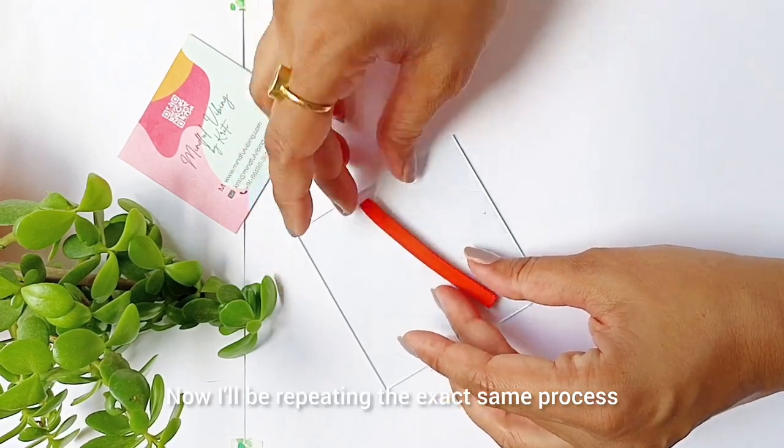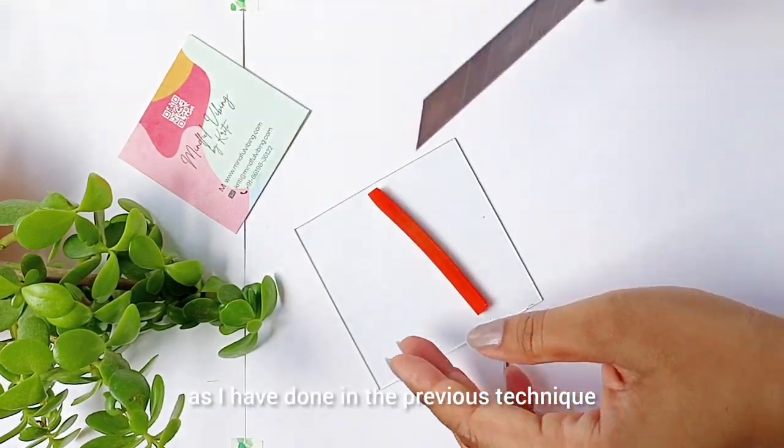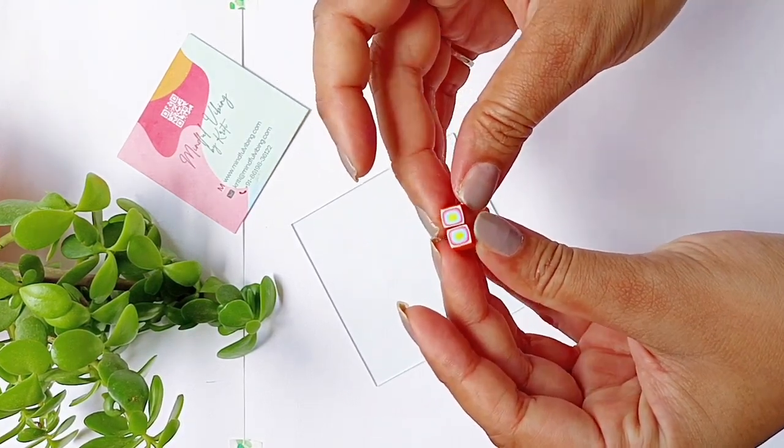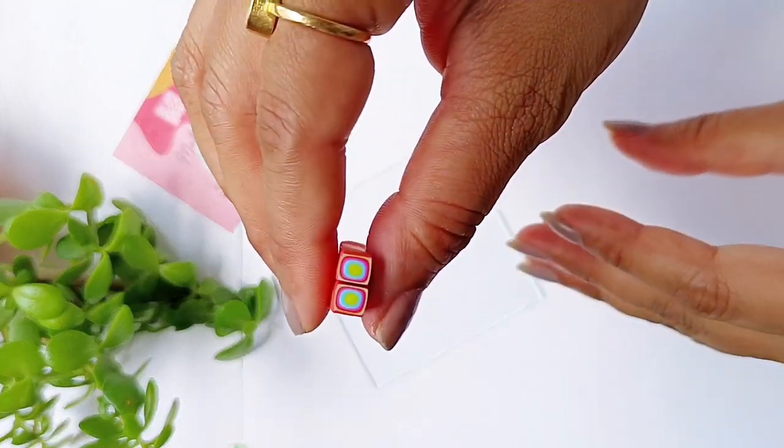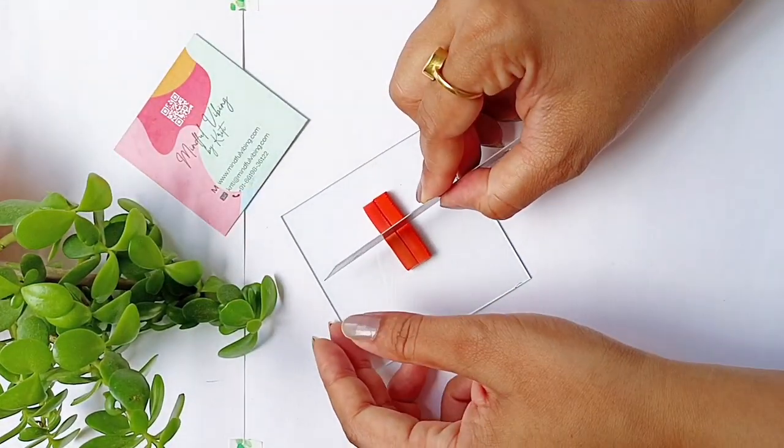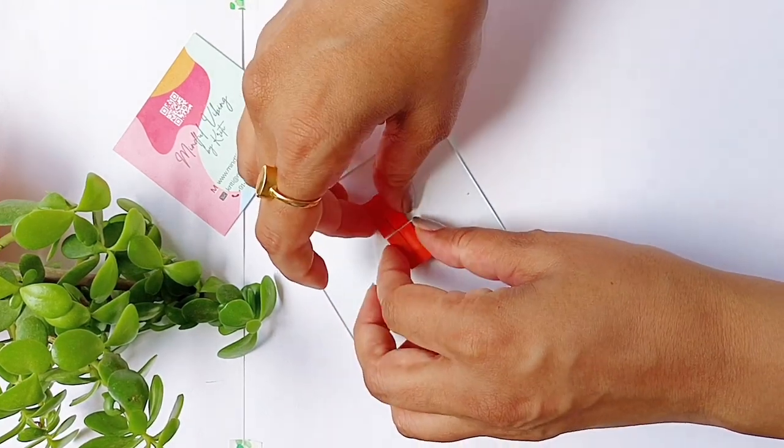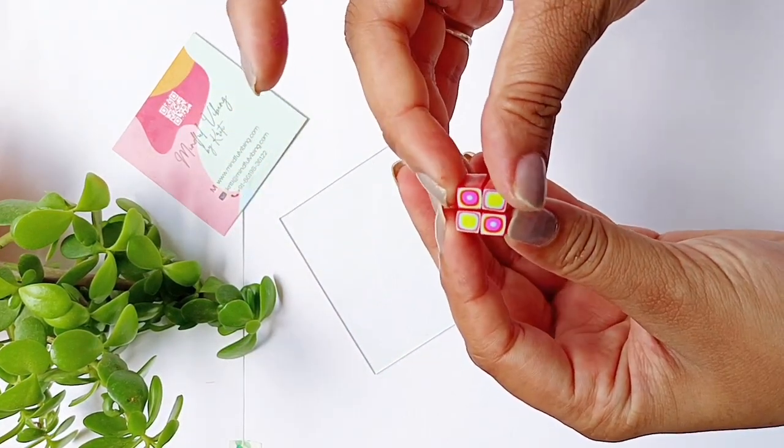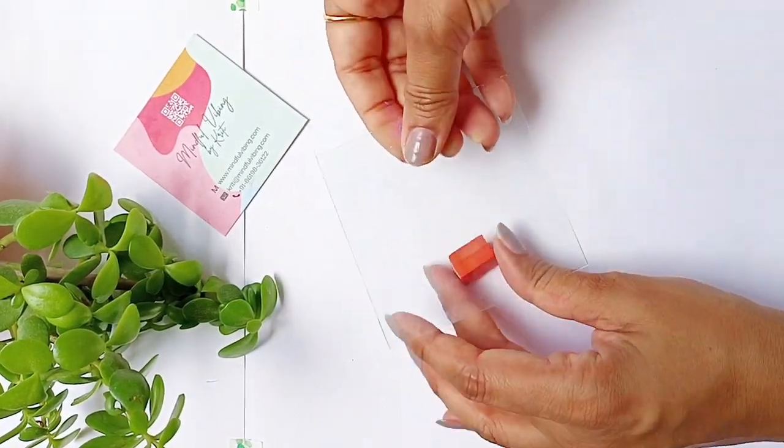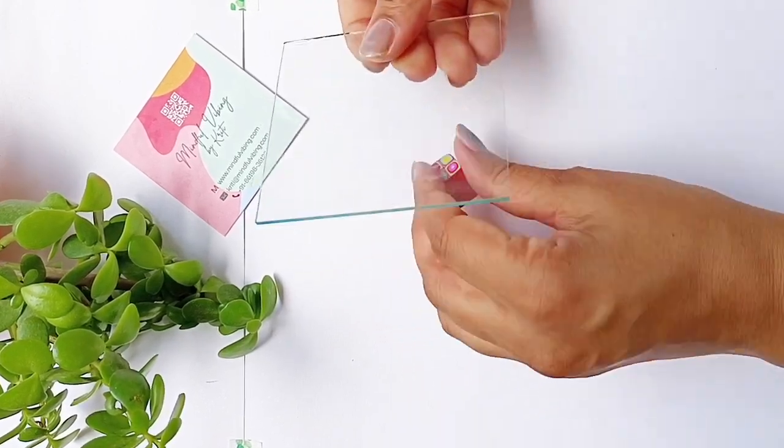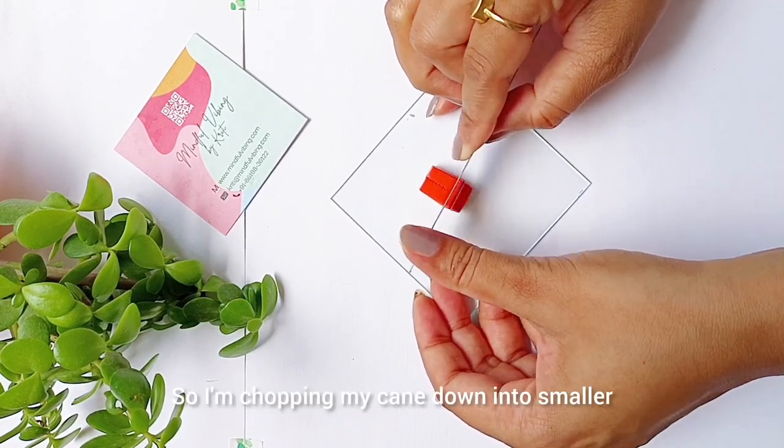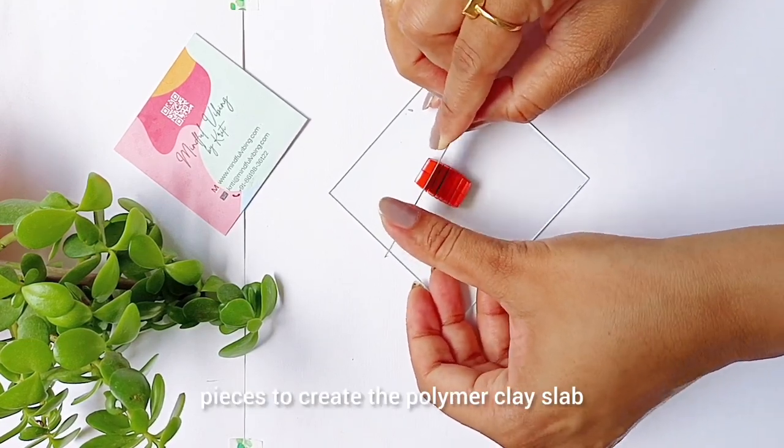Now I will be repeating the exact same process as I have done in the previous technique. So I am chopping my cane down a little bit. I am going to cut it down into smaller pieces to create the polymer clay slab.